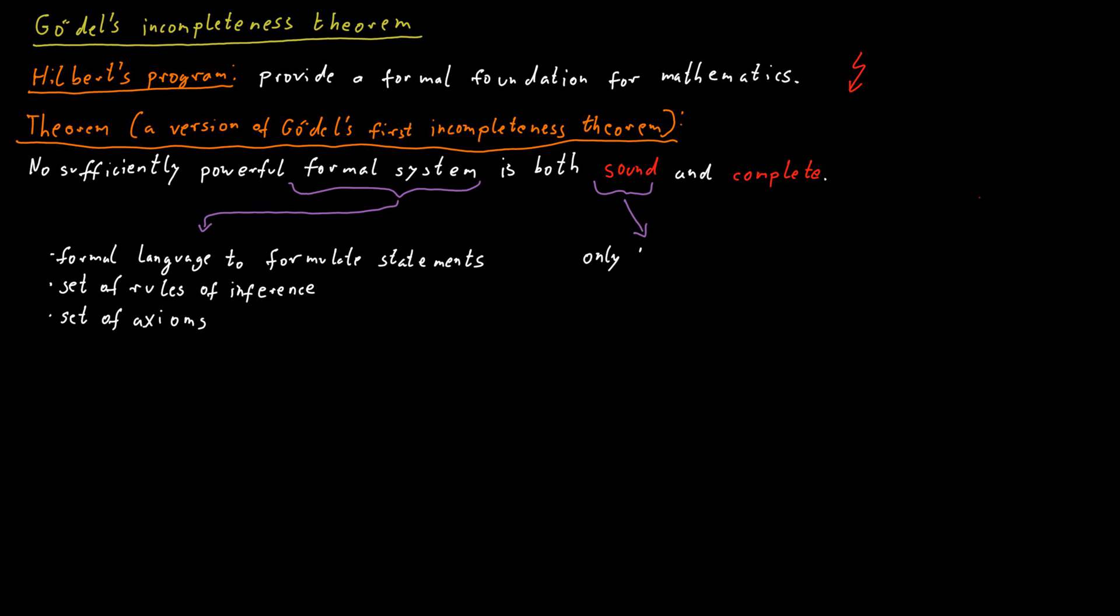What does sound mean? A formal system is sound if only true statements have a proof. And what is complete? A formal system is complete if all true statements have a proof.